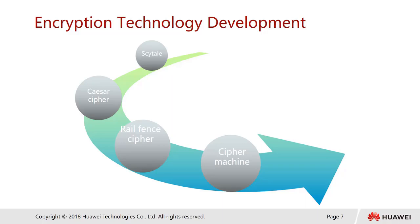The next one is called the rail fence cipher. The rail fence cipher is a kind of cipher where plain text is written downwards diagonally on the successive rails of an imaginary fence, then moving up when the bottom rail is reached, creating a zigzag pattern — like writing on a row of fence posts, going from top to bottom and back up, forming a stream of messages.